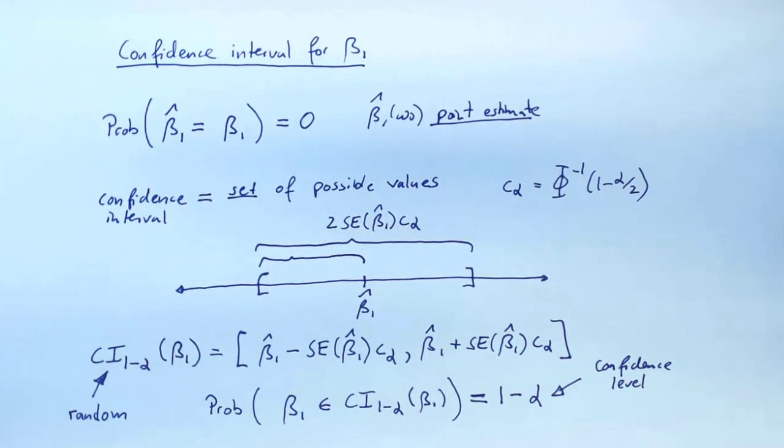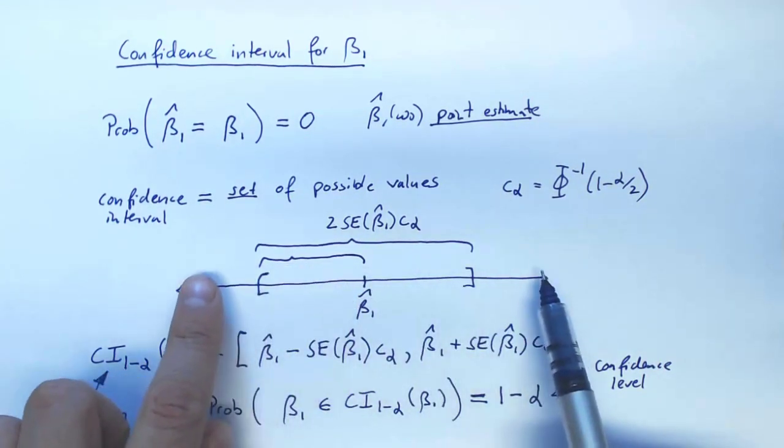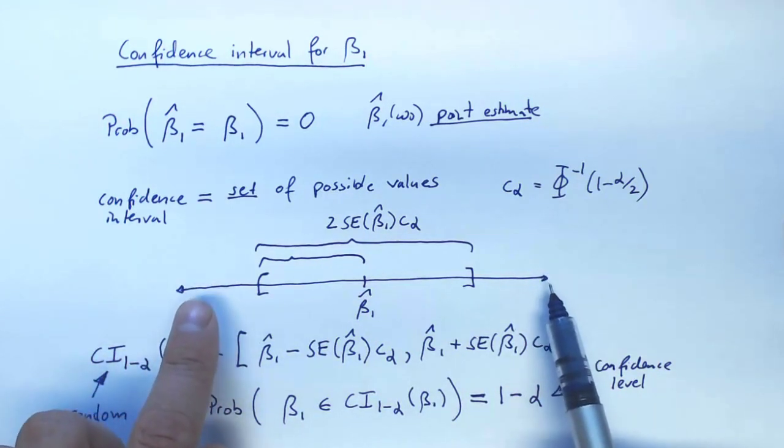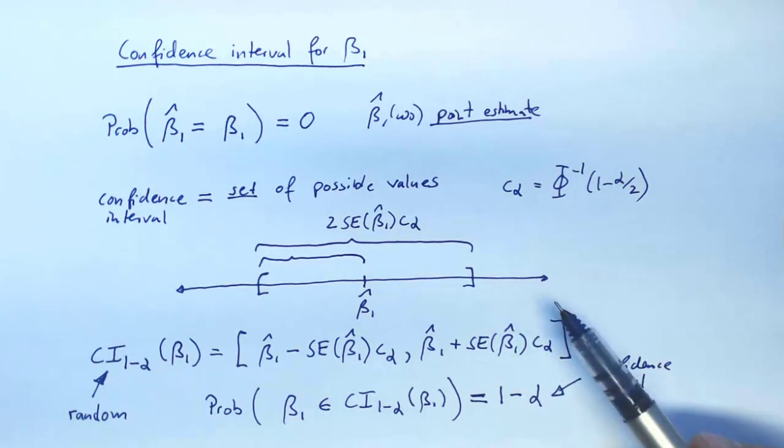Also what happens if for some reason the standard deviation of beta 1 hat increases. So we get a more uncertain, a more imprecise estimator of beta 1. Well, if the standard deviation increases, we expect the standard error to reflect this and to also increase. So if we have a less precise estimator of beta 1, that means again the width of the confidence interval increases. So we have to report a larger set of possible values due to the increased uncertainty.